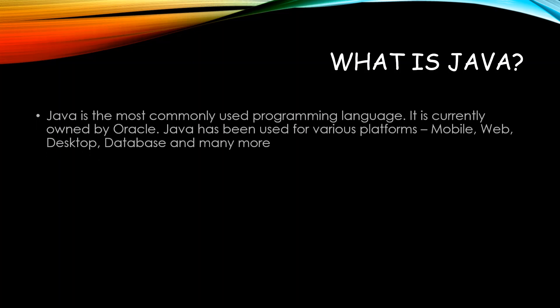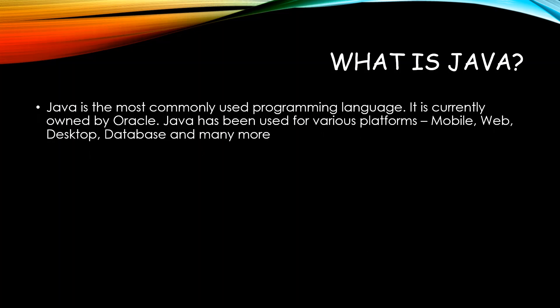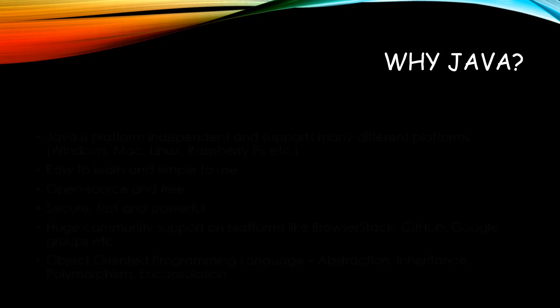What is Java? Java is one of the programming languages which is commonly used. It is currently owned by Oracle — earlier it was with Sun Systems. Java works on various platforms like mobile, web, and desktop. Most of the applications you see around you are running on the Java platform.